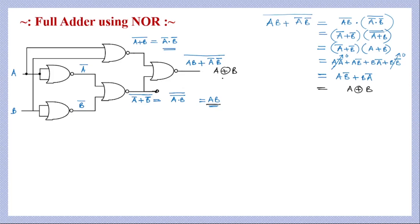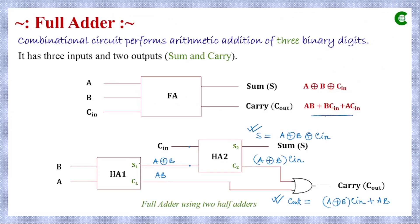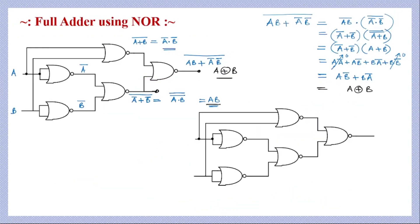From this circuit, the sum of the half adder is taken from the final output point, and the carry is taken from the intermediate point giving A·B. Since we are implementing a full adder using two half adders, the same design is now applied in the next stage for the second half adder. The sum of the second half adder will be the final sum of the full adder.